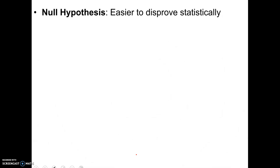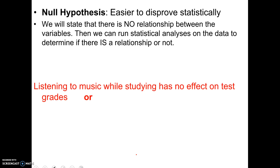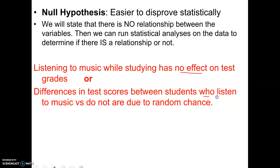Here's how science works around that problem. Instead of making just a prediction, we also make what's called a null hypothesis. A null hypothesis is set up so that we can disprove it or support it statistically. We're going to say there will be no relationship between the variables — either listening to music will have no effect on the scores, or differences in test scores between those who listen and those who don't are due to random chance. That's your null hypothesis, even though your prediction says music will help.